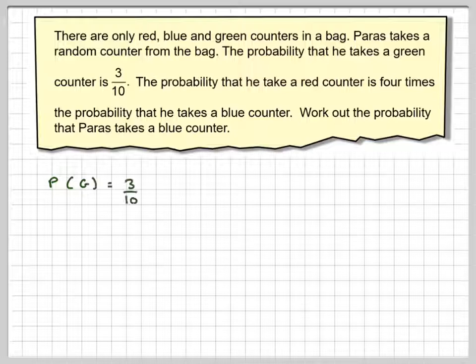So, we've got the probability of a green being equal to 3 tenths. Now, all probabilities in any situation always add up to 1. Therefore, the probability of getting a red or blue will be 1 minus 3 tenths.